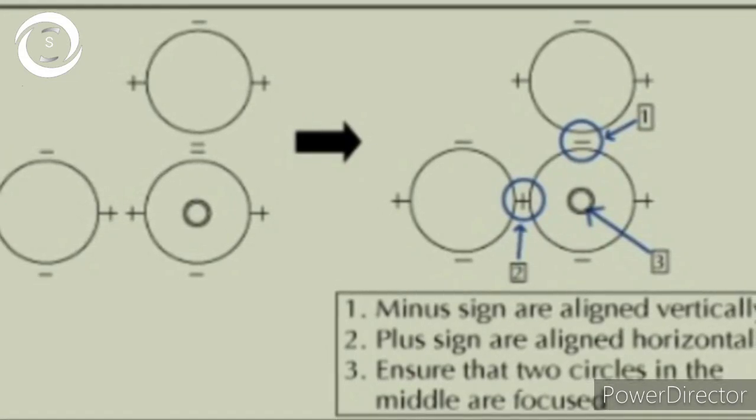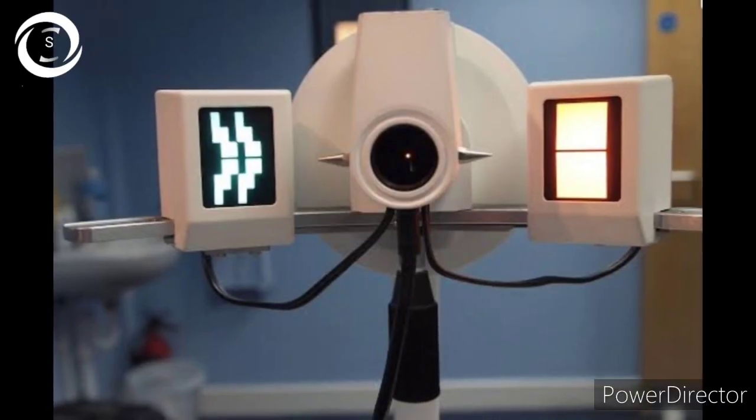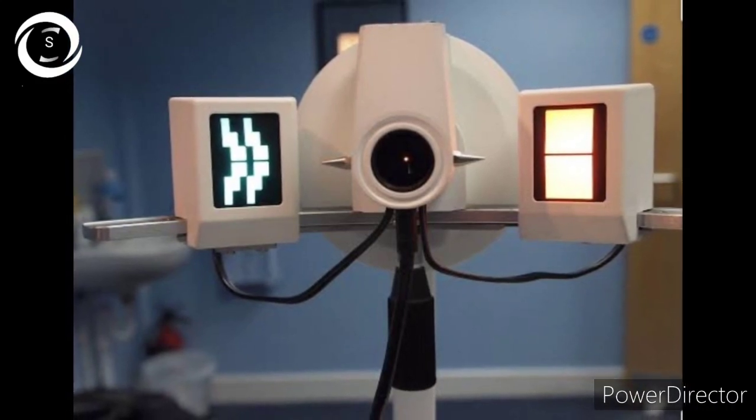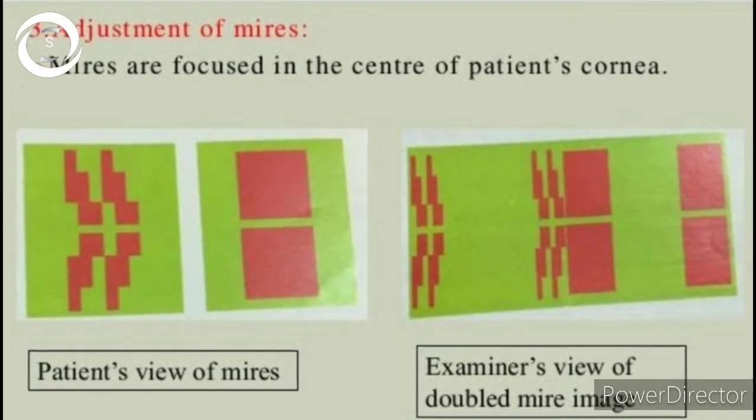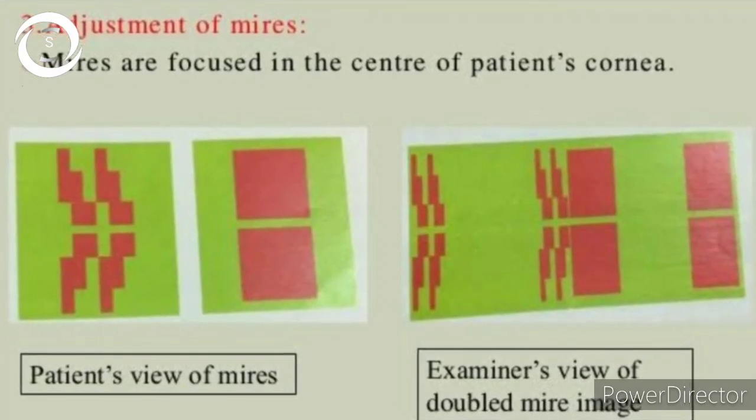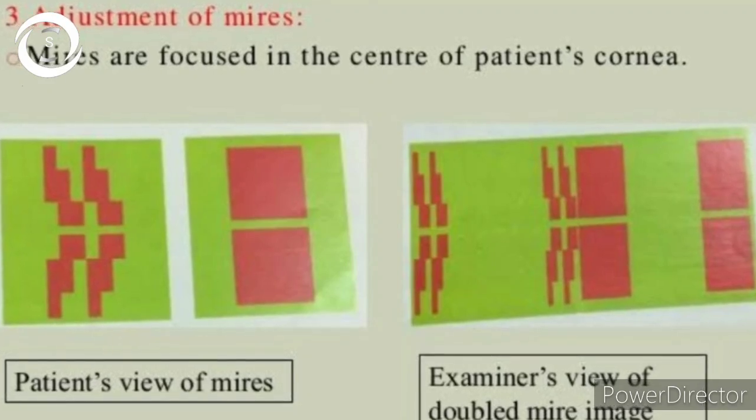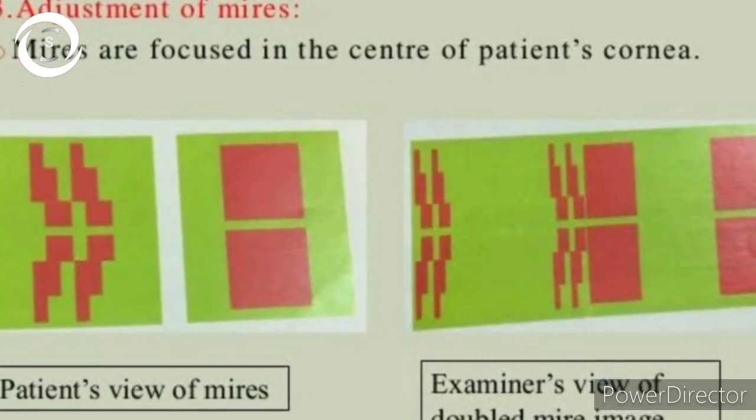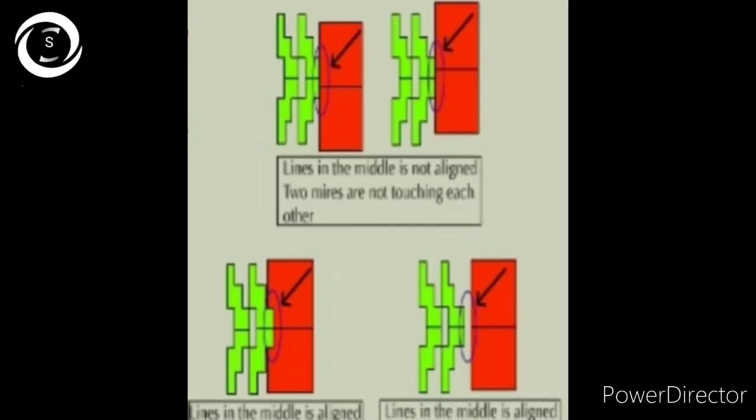Now comes the Javal-Schiotz keratometer. Mires are focused in the center of the patient's cornea. You can see the patient view and examiner view of the steps and the rectangle. You rotate the dial of the keratometer and the steps and rectangle are brought closer and should be focused.